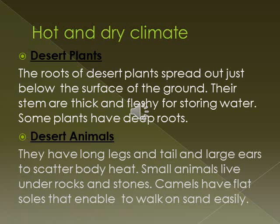Desert plants. The roots of desert plants spread out just below the surface of the ground. Their stems are thick and fleshy for storing water. Spines and hair on the surface of stems and leaves of cacti prevent water loss. Some plants have very deep roots.